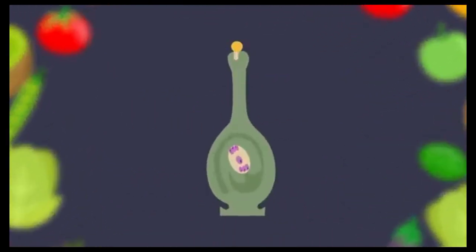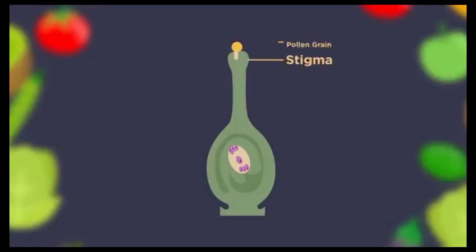Fertilization results in the production of seeds. A mature pollen grain containing two male sex cells has landed on the female stigma of the same species. The pollen grain grows a pollen tube that goes down the female style to the ovary.